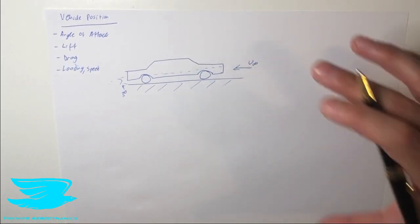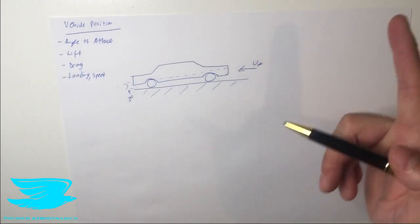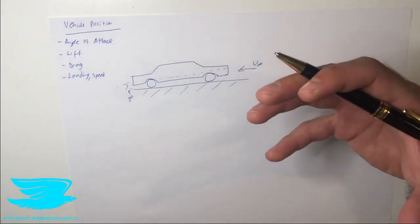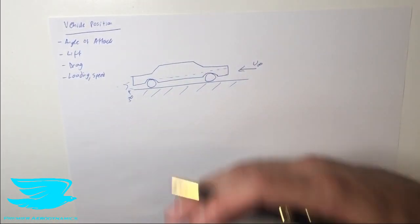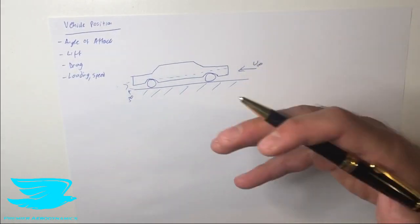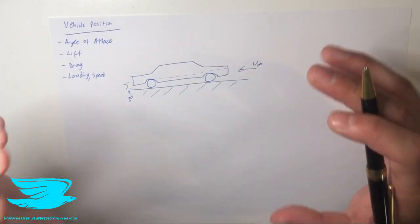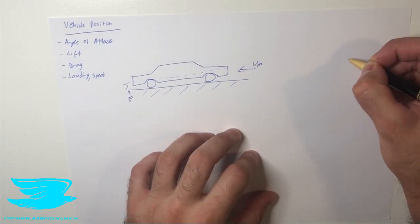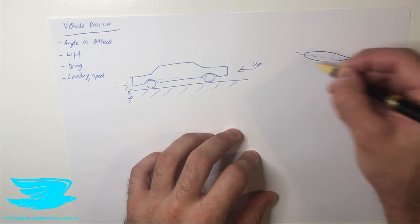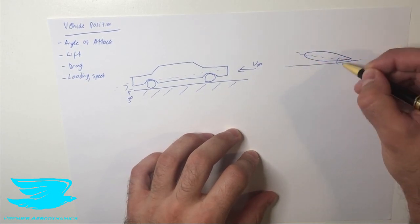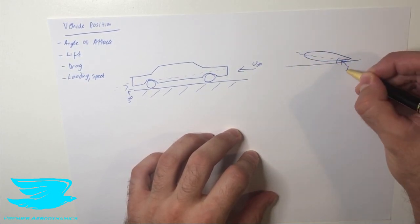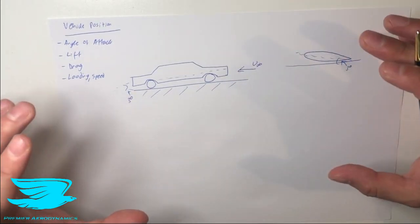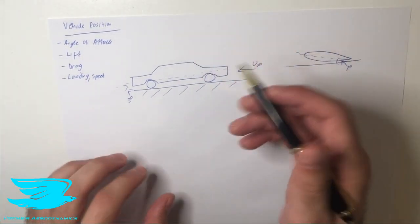So why is this important? Well if you know about airfoils, you'll know that airfoils produce lift and drag at different angles of attack and cars are actually not quite different to that. In fact a car is quite similar to an airfoil.